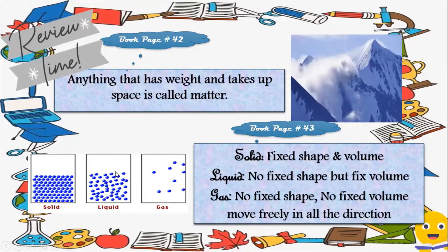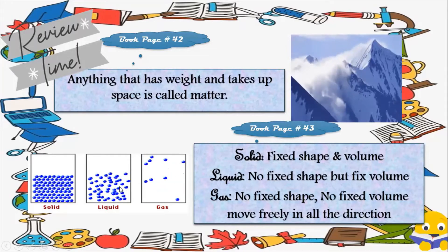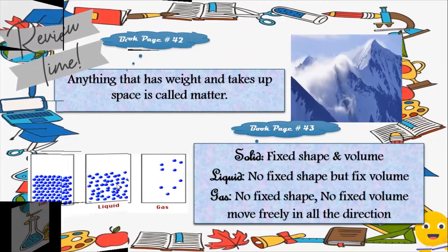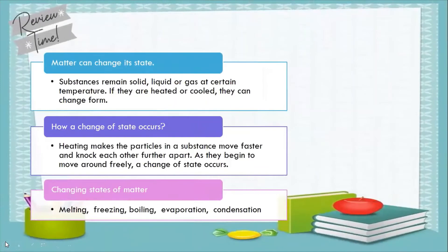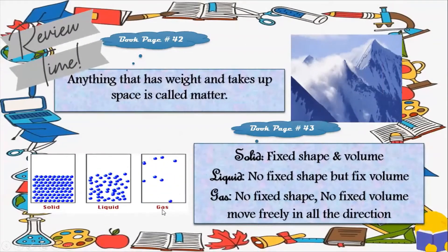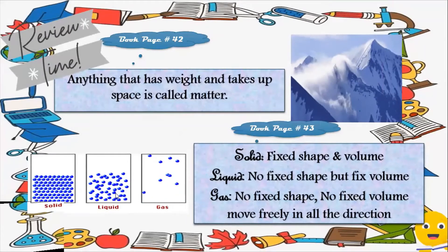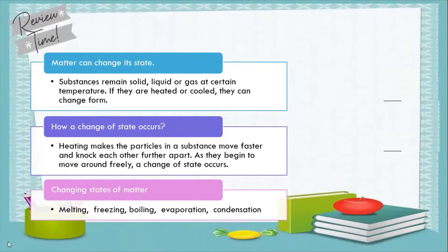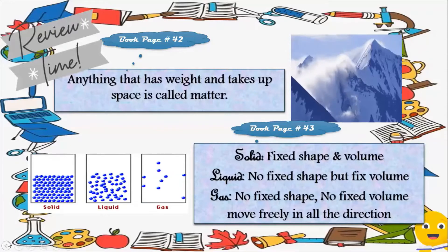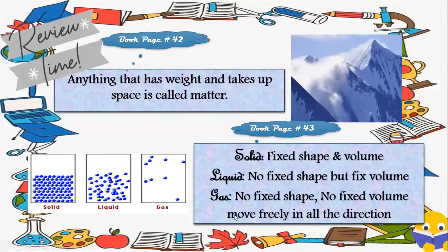Liquid. In a liquid the particles are close together but they can slide over one another within a certain limit. Therefore, a liquid has no fixed shape but it does have fixed volume.